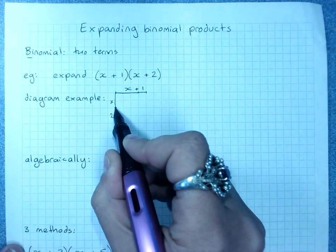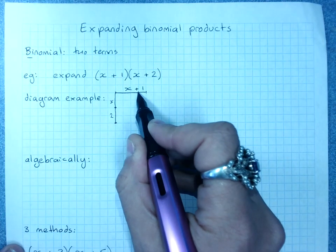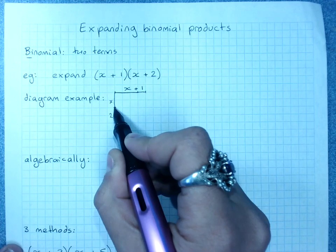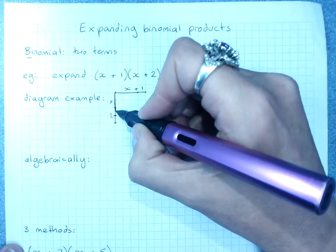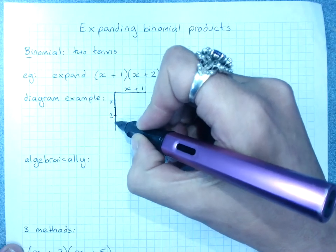So x times x. Oh no, this is x. I made x that long. And that's 2. There we go.